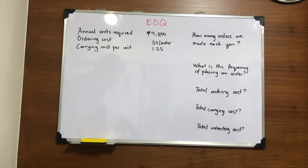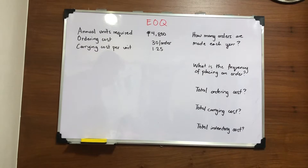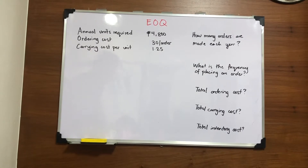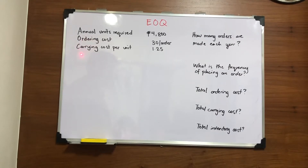In determining the quantity to be ordered, the cost of placing an order and the cost of carrying inventory must be considered. So there are two points to be considered here. First is your ordering cost. Second is your carrying cost.